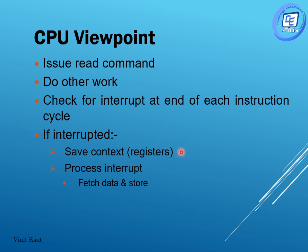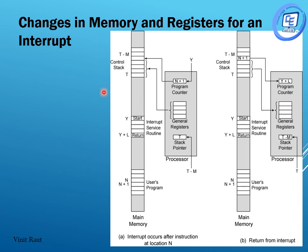Context switching is an OS concept of switching from one process to another. The interrupt is then processed: in processing the interrupt, the CPU fetches the data and stores it into memory, taking the data from the IO module and storing it in memory. Now, what are the changes in memory and registers for an interrupt? When an interrupt occurs, what changes happen in the memory and registers?